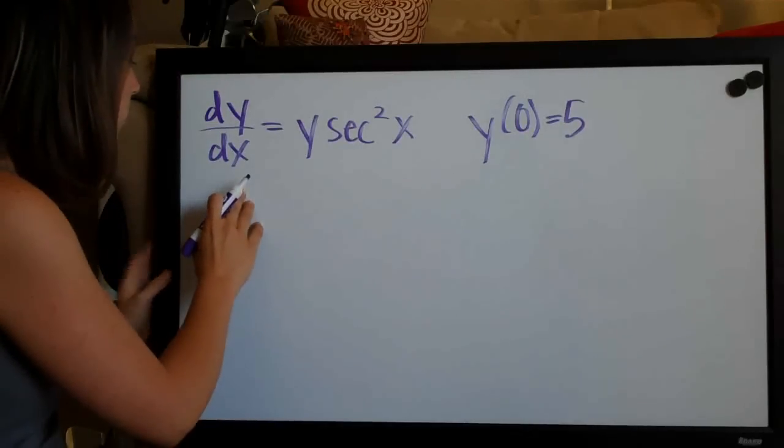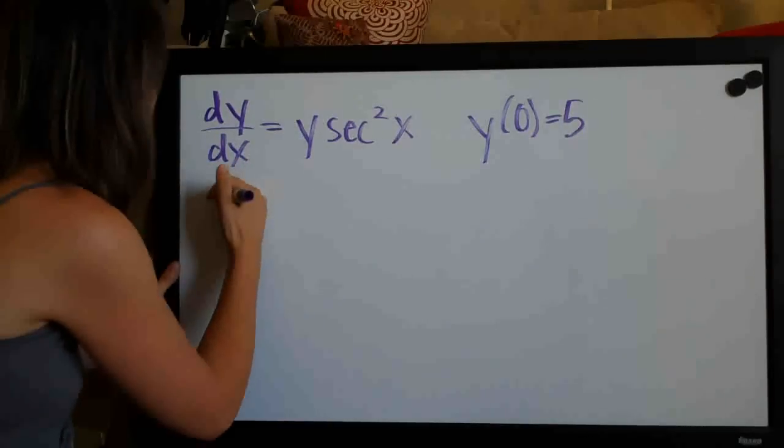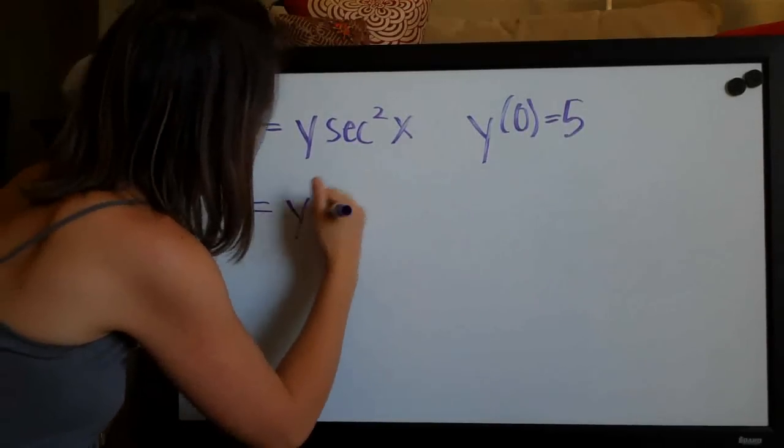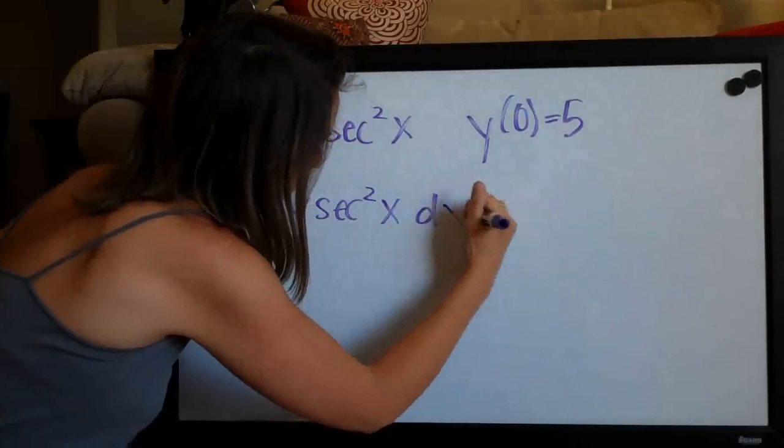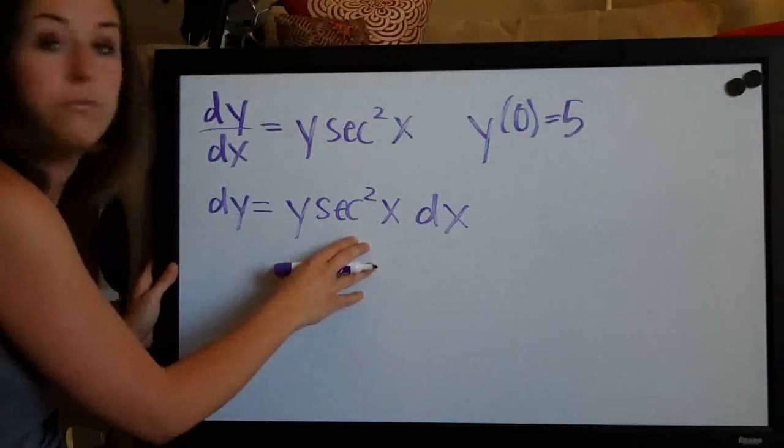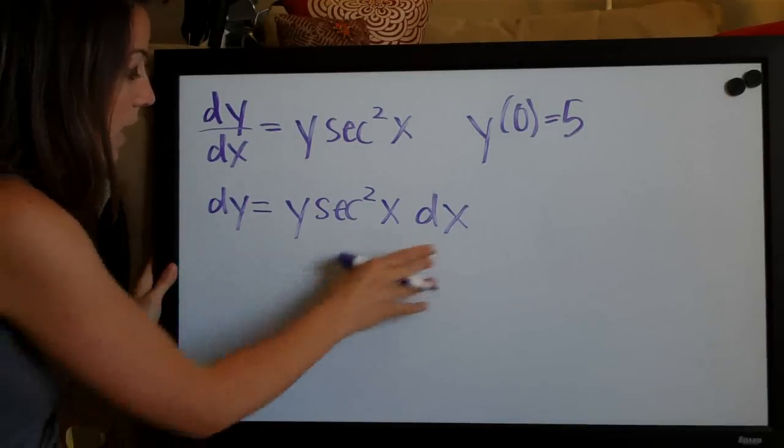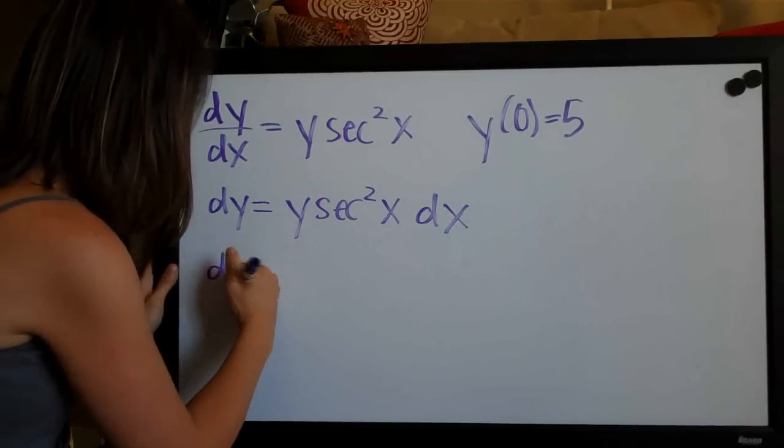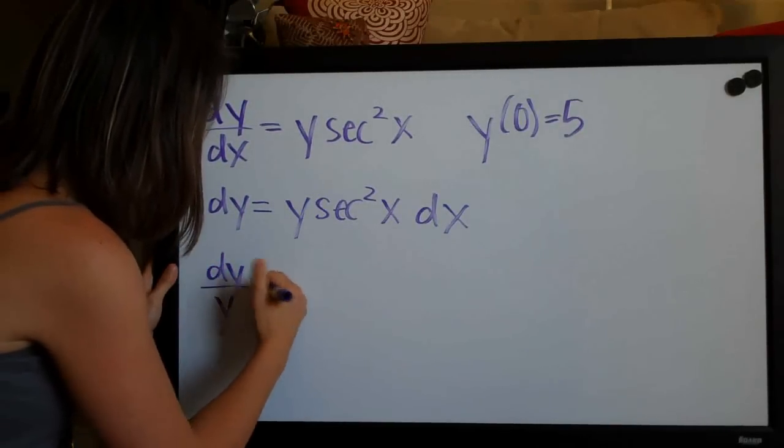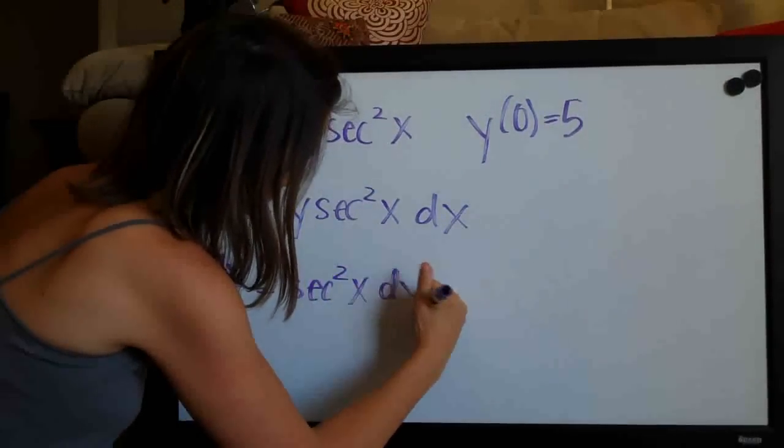So we're going to start by multiplying both sides by dx. So we'll have dy equals y times secant squared of x dx and then we'll divide both sides by y to move all the y's over here and just leave the x's on the right side. So we'll end up with dy over y equals secant squared of x dx.